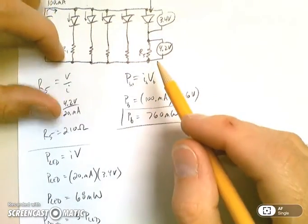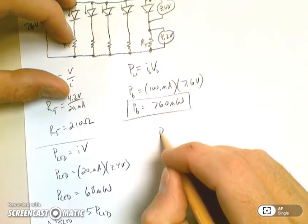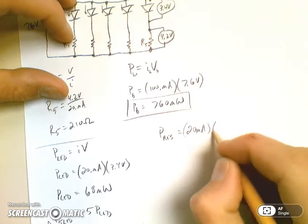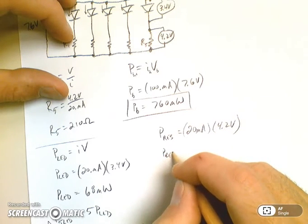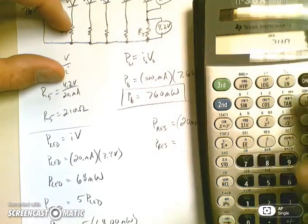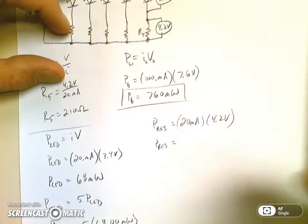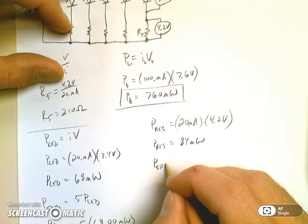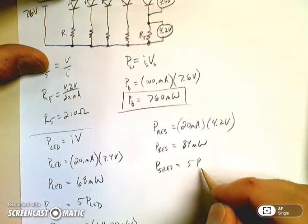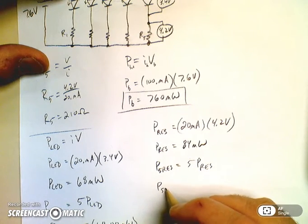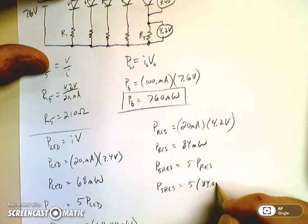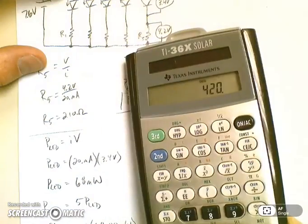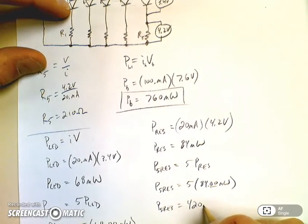So there's the power of my LEDs that's being consumed out of the total power drawn from the battery. Let's check and make sure that's correct. So now I'm going to look at the power of my resistors. This is just for one resistor, so again I have 20 milliamps, 4.2 volts. So I have 20 times 4.2, I have 84 milliwatts for one resistor. The power through five resistors is going to be five times 84 milliwatts, and I get 420 milliwatts.